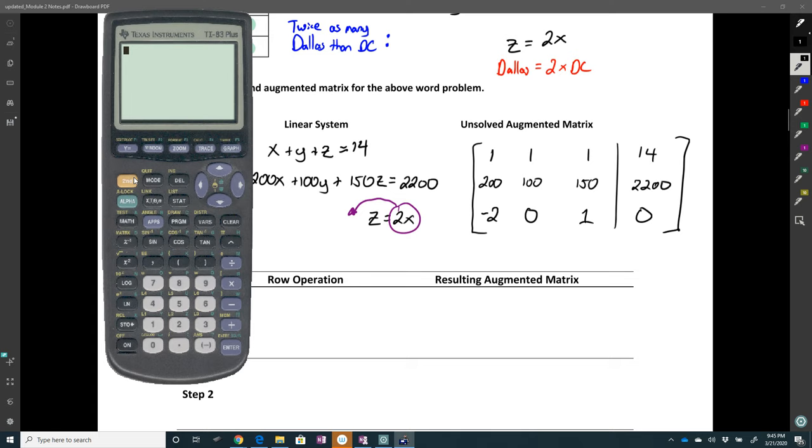Right. And second matrix. I go to the math menu. Go down to RREF. Matrix A. And we can see that my answer is going to be 4, 2, 8.